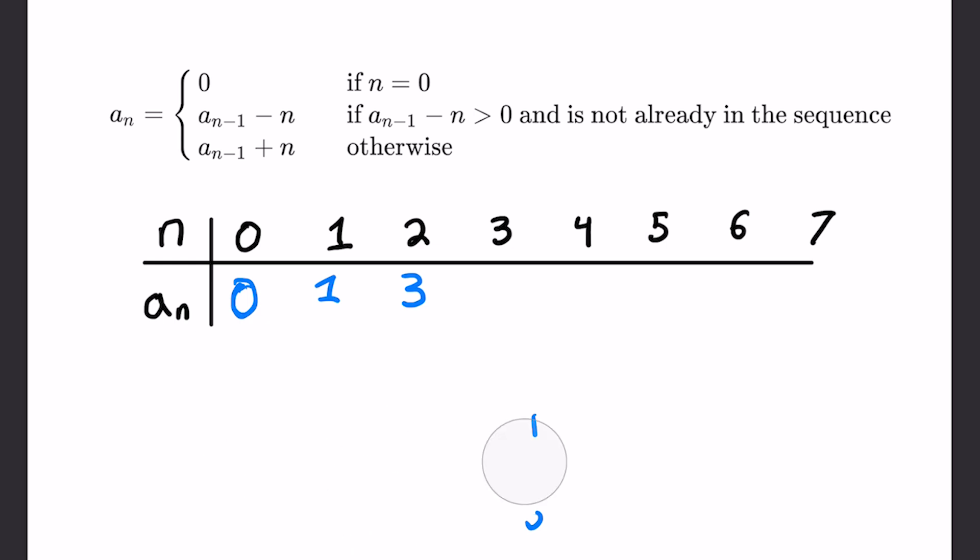Then we do a similar thing for a_3. A_3 has two options. It can either be a_2 minus three or a_2 plus three, but a_2 is three. So three minus three is zero or six. And zero is not greater than zero, right? It's equal to. So therefore we have to ditch the first option and go with six again.